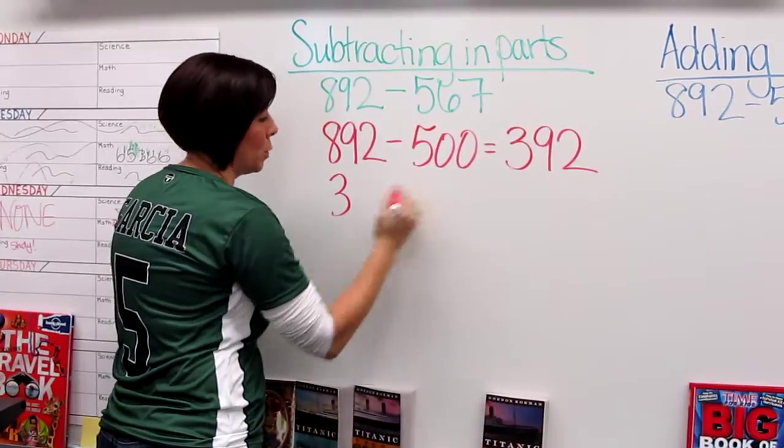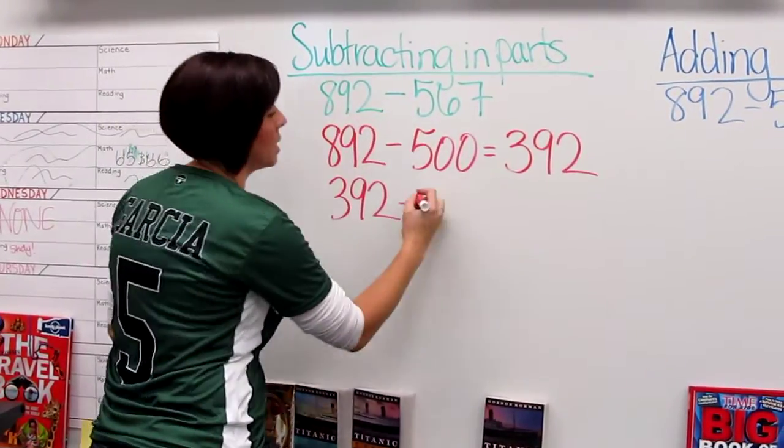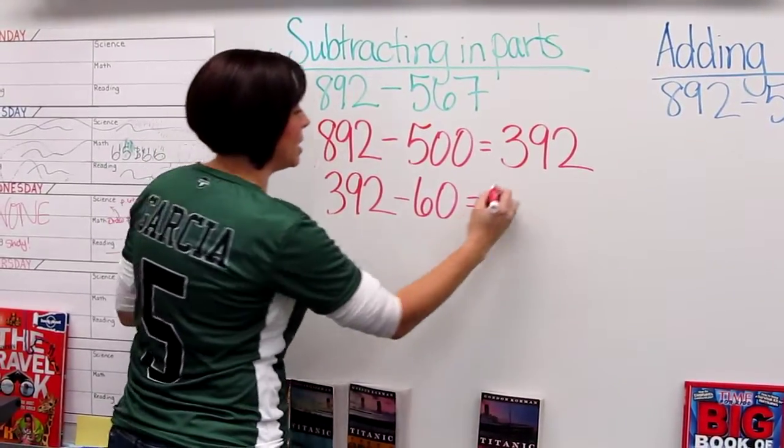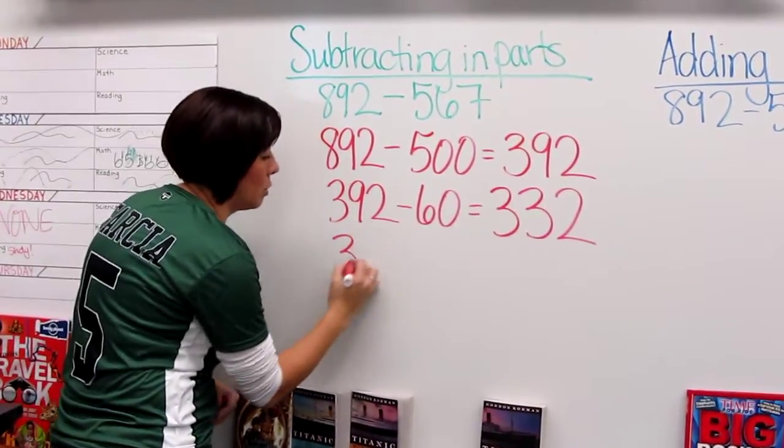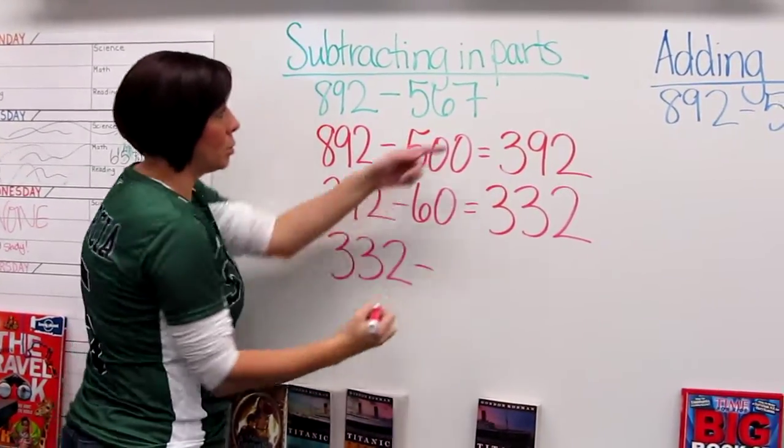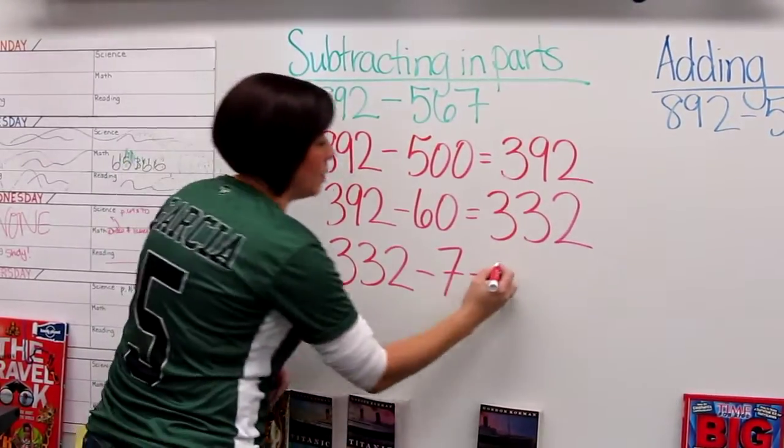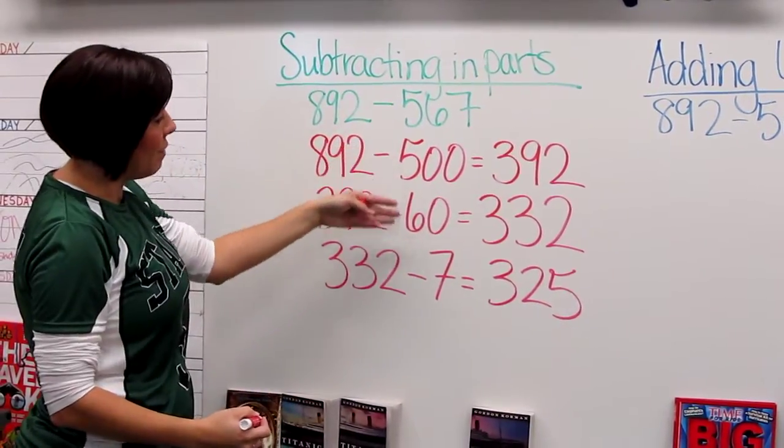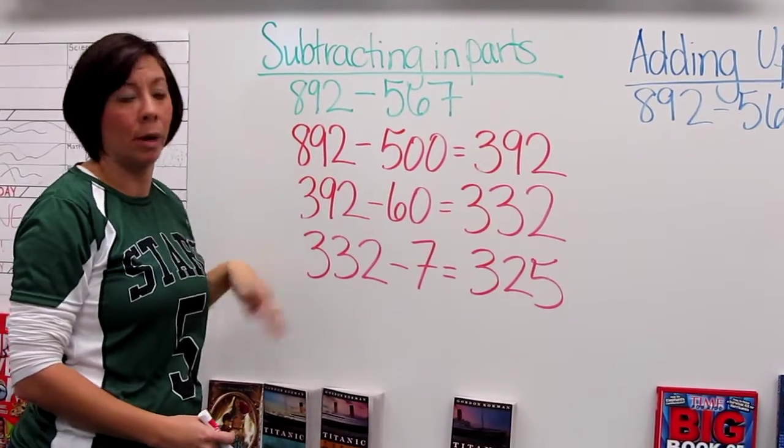Then I bring down 392 and I take care of the tens place, the 60. 392 minus 60 gives me 332. And then I drop down 332 and I subtract my last part, 7. And that gives me 325. Then altogether I've subtracted 567 but I've just broken it down into parts and that's how we subtract in parts.